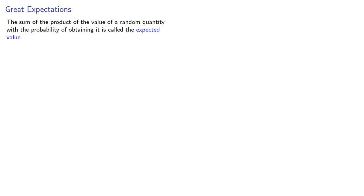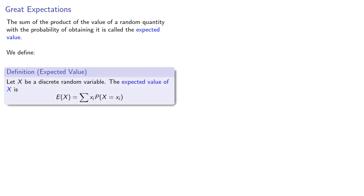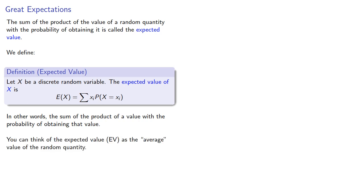So let's begin with discrete random variables. Let X be a discrete random variable. The expected value is given by this formula: E(X) = sum of xi * P(X = xi). In other words, the sum of the product of a value with the probability of obtaining that value. And you can think about the expected value as the average value of our random quantity.